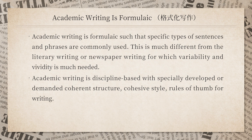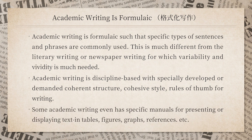Academic writing is discipline-based, with specifically developed and demanded coherent structure, cohesive style, and rules of thumb for writing. When I say discipline-based, it's for psychology, education, literature, history, mathematics, chemistry, economics — you name it. There are specific requirements for your own discipline in regard to how to write good academic papers. Some academic writing even has specific manuals for presenting or displaying text in tables, figures, graphs, and references. Like psychology — we have what is called the American Psychological Association manual, or APA style. There is also the AMMA style and the Chicago style. You have to make sure that the references, all the tables and figures, follow the expected guidelines for writing.